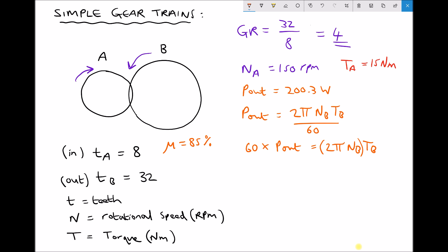So now we can write tb, the thing we're trying to find, equals 60 times P out all divided by 2π n subscript b.